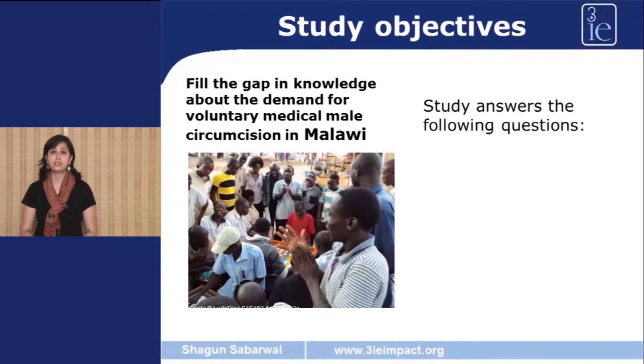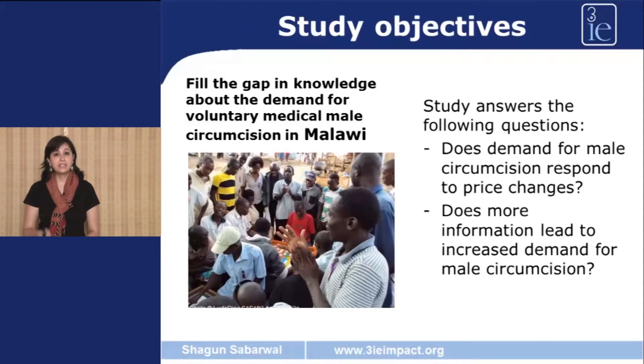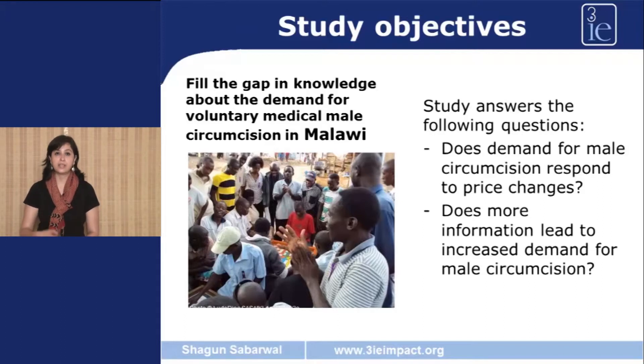Specifically, the study aims to answer two important questions. The first is: does the demand for male circumcision vary according to the price? And the second is: does information about male circumcision and its relationship to HIV influence the take-up or adoption of male circumcision? Now, how did the evaluators go about answering these two questions? I would like to pause and look a little bit at the evaluation design used by the study.